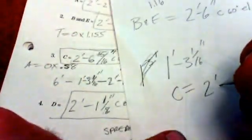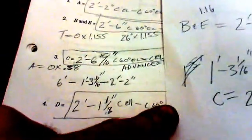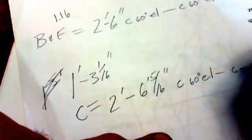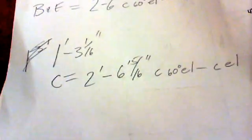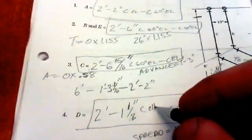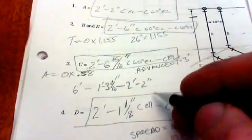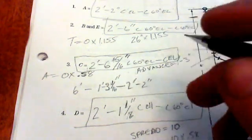Center of 60 elbow to center of elbow. So, C equals 2'6 and 15/16. I thought I saw in there somewhere they used two L's for elbow, but I don't know. One L seems to get the point across from me.